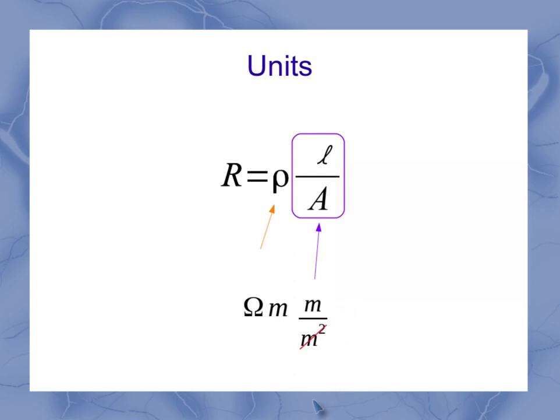Now, my meter squared on the bottom is going to cancel the 2 meters up on top, leaving me with units of ohms for my resistance. So resistance is measured in ohms. Resistivity is measured in ohm meters.